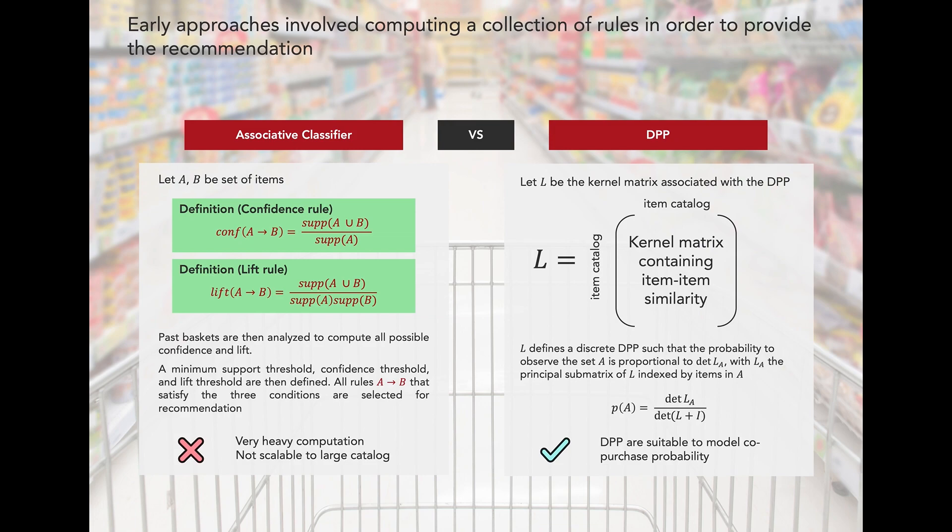DPPs are parameterized by a positive semi-definite kernel matrix called L, whose parameters describe item-to-item similarities. The probability of a subset A in this model is proportional to the determinant of the submatrix of L indexed by the items in A.